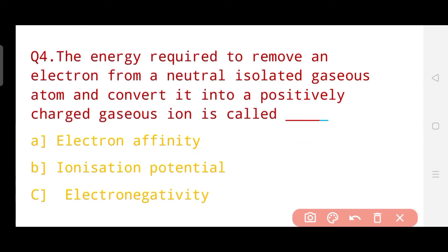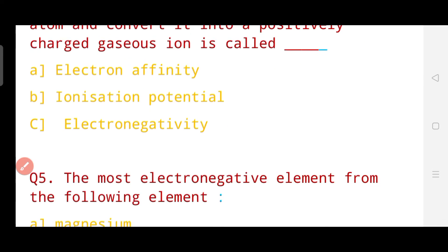Question number four is a very important question. It says: the energy required to remove an electron from a neutral isolated gaseous atom and convert it into a positively charged gaseous ion — what is that term? Is it electron affinity, ionization potential, or electronegativity? The correct answer of question number four is ionization potential. Ionization potential is the energy required to remove an electron. Now let's go to question number five.